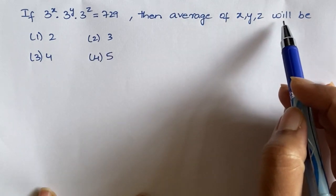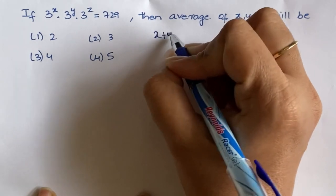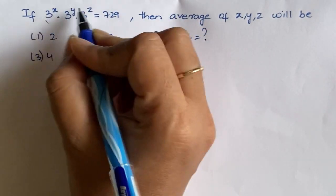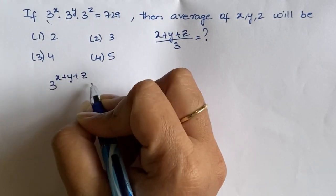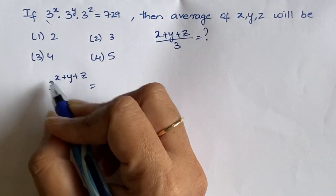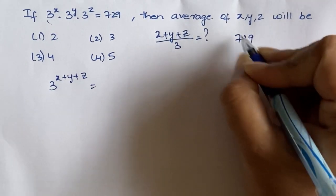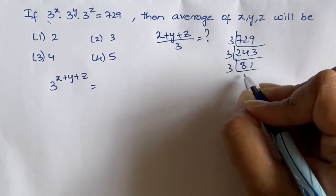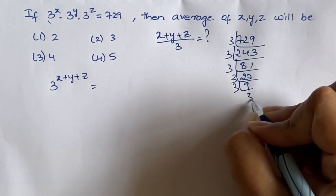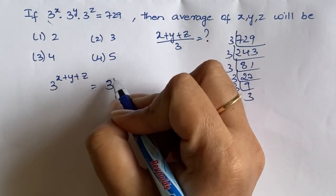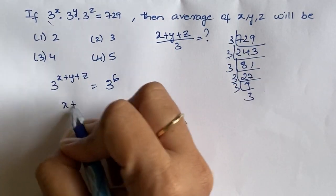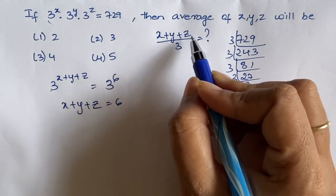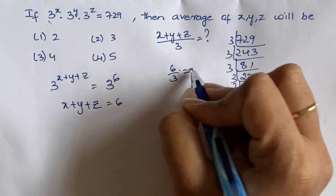What will be the average of x, y, z? The average is x plus y plus z by 3. We solve: 3 to the power 6 equals 729, which implies x plus y plus z equals 6. So the average is 6 by 3, which equals 2. The first option is the answer.